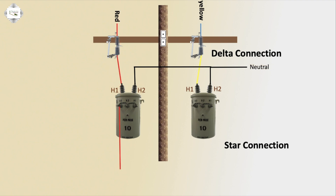X1 is connected for the second phase, and X1 outgoing carries the blue third phase. On the high voltage side the connection is delta, and on the secondary low voltage side it is an interconnection — meaning a delta-to-interconnection conversion.